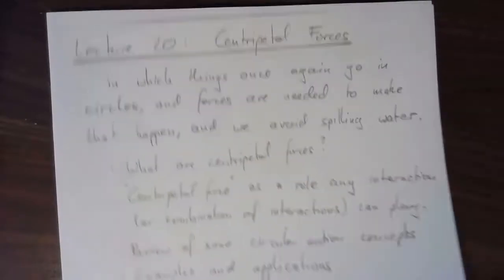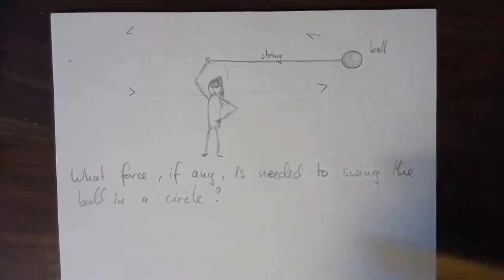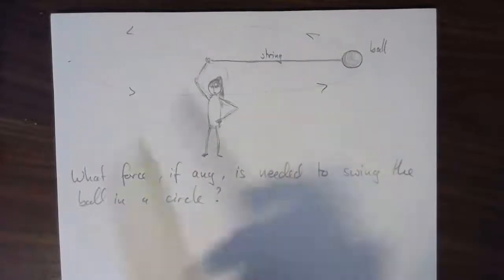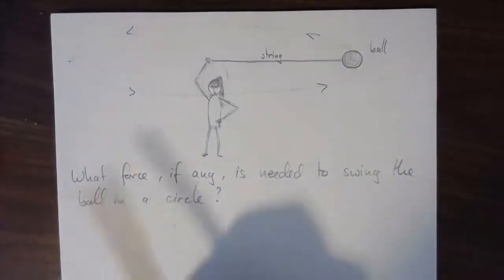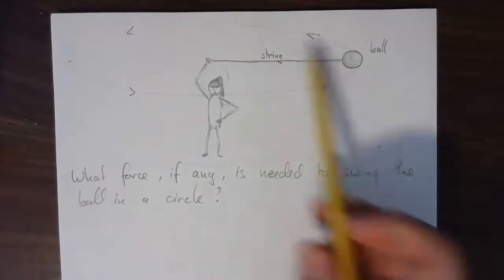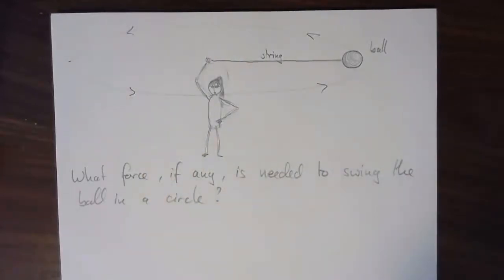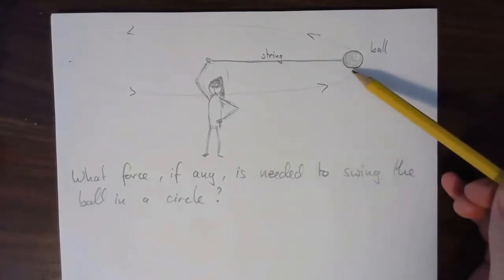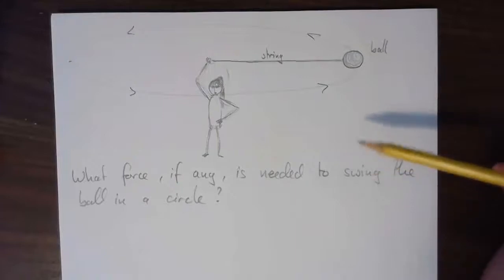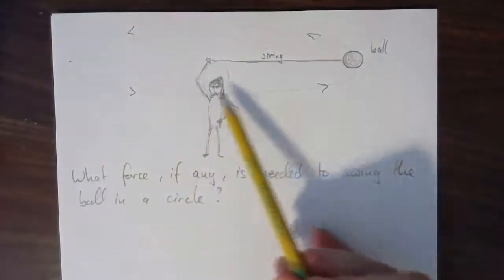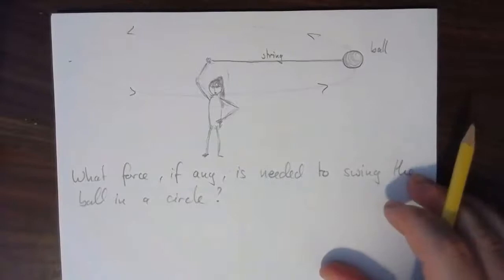Imagine you're standing there holding a string, swinging it around with a heavy ball attached to the end. The question is: what force, if any, is needed to swing this ball in a circle? Is there a force needed? Yes, because Newton's first law tells us that if there's no force on the ball, it would fly in a straight line at constant speed. But here it's constantly changing direction, so yes, we need a force.